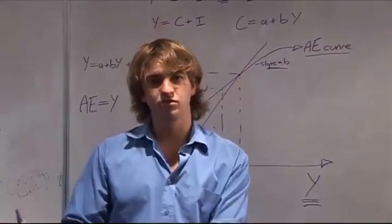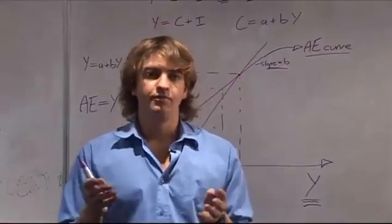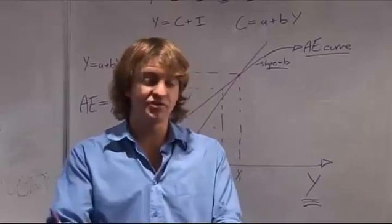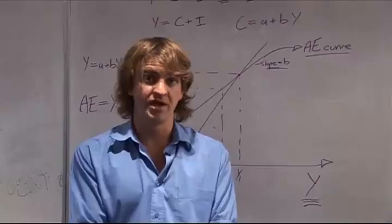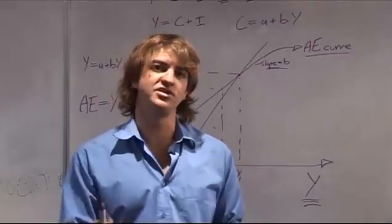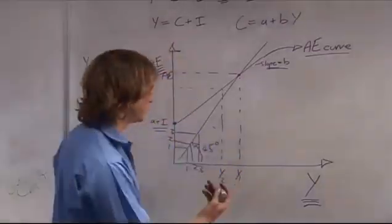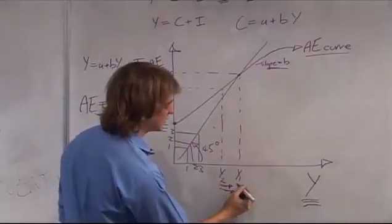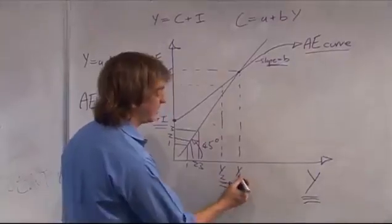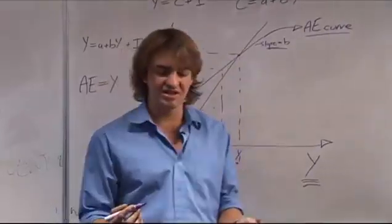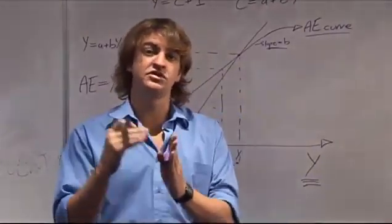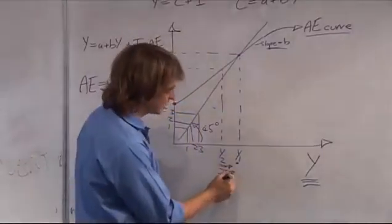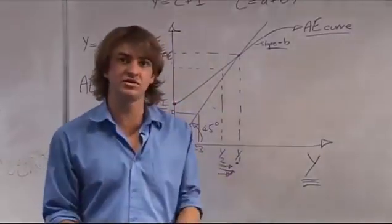Your inventories are going to get smaller and smaller. Managers of the firms are going to see this and say they need to increase production. So they're going to increase production, carrying on increasing production up until the point where they reach equilibrium — when suddenly the level of inventories remains the same.